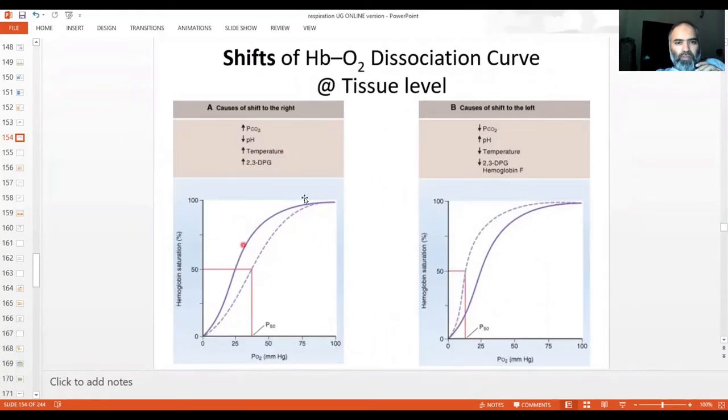As you can see on this side, there are a bunch of causes which shift this curve to the right, while over here it's the opposite. The curve is shifted to the left. What do we mean by that? Let me just explain that first and then we'll go into the individual causes. So this is the curve as you can see.